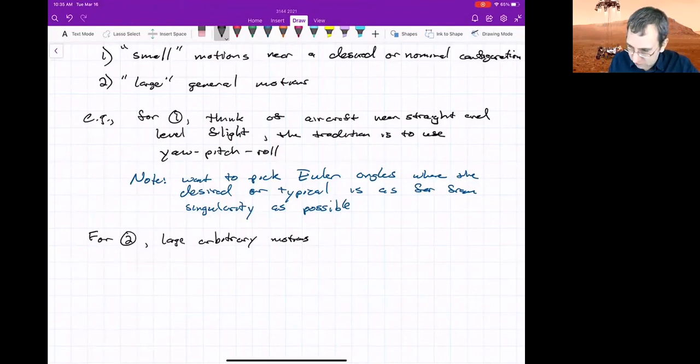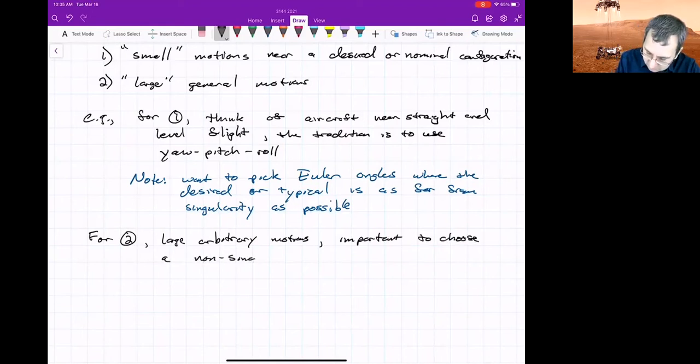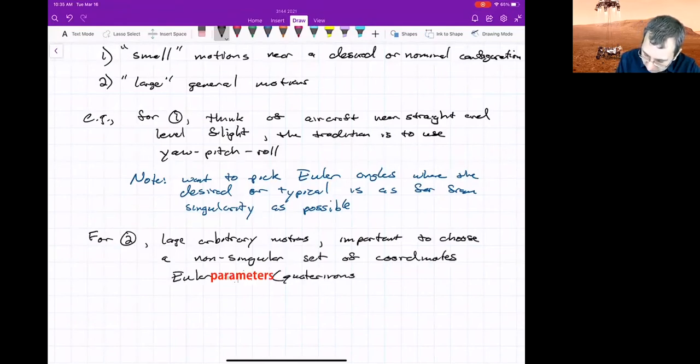So for large arbitrary motions, it's important to choose a non-singular set of coordinates. And so for that, the Euler parameters, quaternions are a very popular choice.